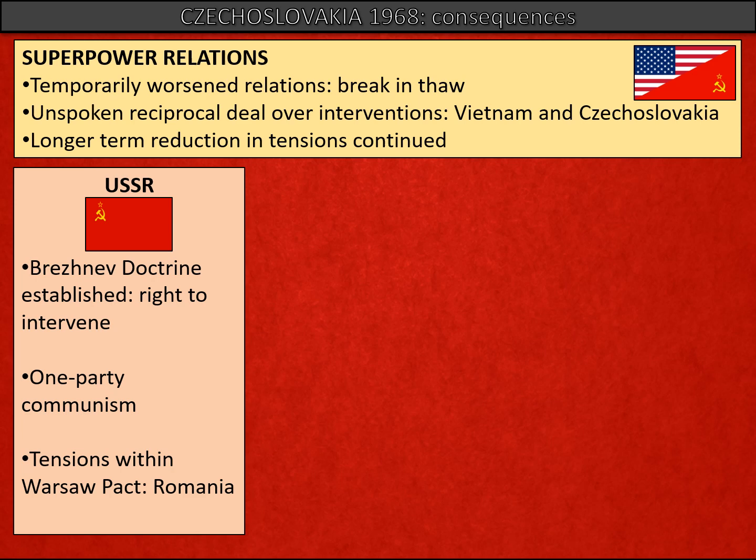Consequences for the Soviet Union were quite definite. The Brezhnev Doctrine was established, which justified the Soviet intervention. The doctrine stated that the Soviet Union would actively intervene if any member state of the Warsaw Pact looked like it was going to leave or was straying from the path of one-party communism — establishing that the Soviet Union had the right to protect its security. This tied satellite states closely to them, though it did come at some cost: Romania disapproved of the Soviet Union's actions and didn't take part, but of course wasn't free to leave under the Brezhnev Doctrine.